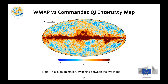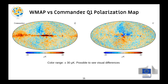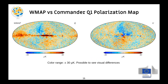Now that we have the gain solution, we can do the map-making. This shows a GIF flipping between the WMAP official solution and the Commander processing. It's very good agreement — kudos if you can see pixel differences. In polarization, the differences are a little more visible, with slightly more power in the WMAP solution. In temperature, the difference between the WMAP Q1 and Commander Q1 is 2 microkelvin, so we're pretty satisfied. There's still a quadrupole feature to understand, perhaps due to kinematic dipole.